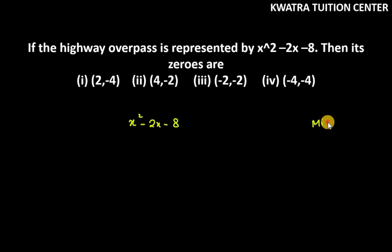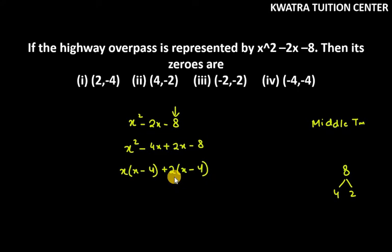By using middle term splitting. You have 8. We have 8 factors that you can add 2x minus 2x. So we can take 4 and 2 simply. So it will be x²-4x+2x-8. Now first two values, you have x common. Last two values, you have 2 common. So you have two zeros: x+2 and x-4.